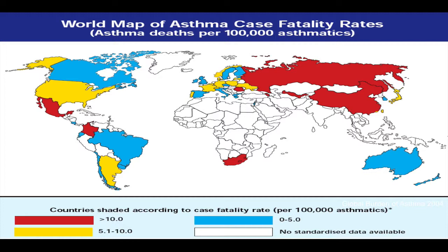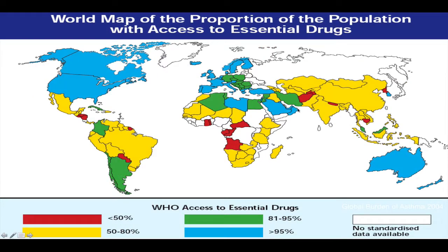One could overlay this map with another one looking at the proportion of the population covered by access to essential drugs, because asthma being a chronic disease needs to be treated with drugs and people need to have access to them. No surprise: high levels of access — over 95% of the population coverage — again in the Americas, many countries in Europe, in Australia, but much weaker in Africa, South America, or Southeast Asia.